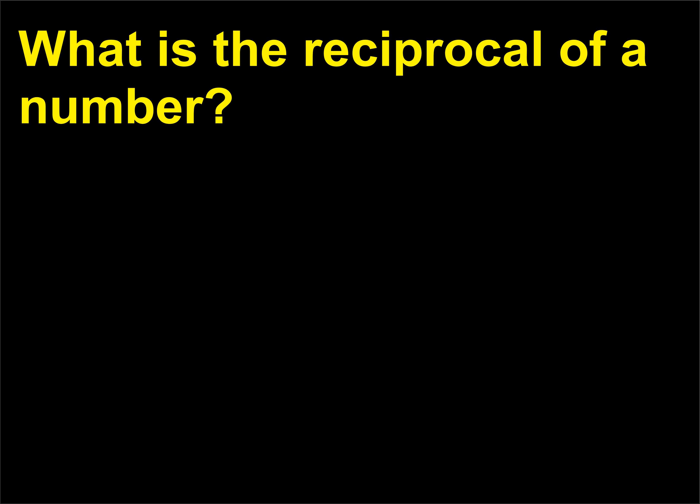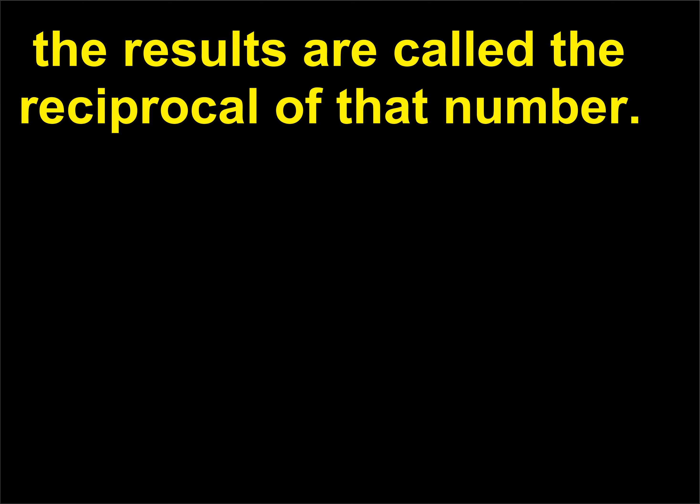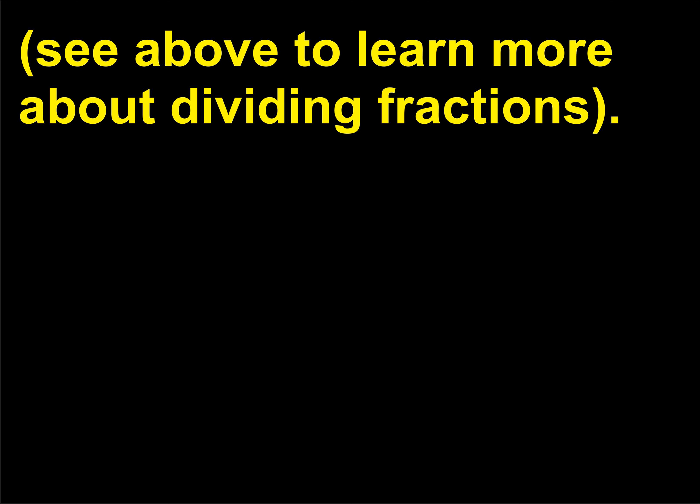What is the reciprocal of a number? The reciprocal of a number is obtained when a given number is divided into 1. The results are called the reciprocal of that number. For example, the reciprocal of 6 is 1 divided by 6, or 1/6. Reciprocals come in most handy when dividing fractions.